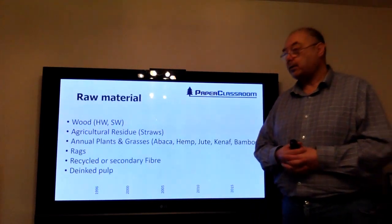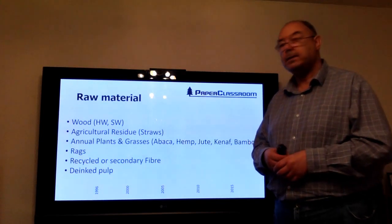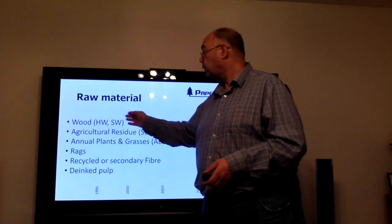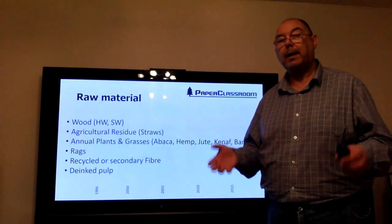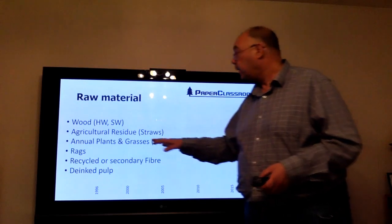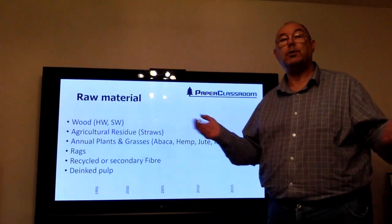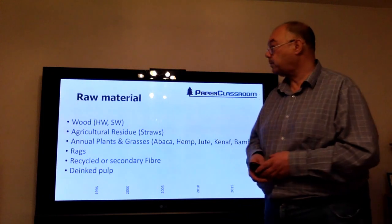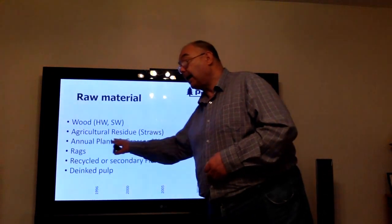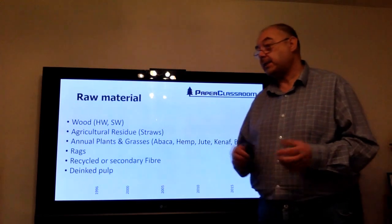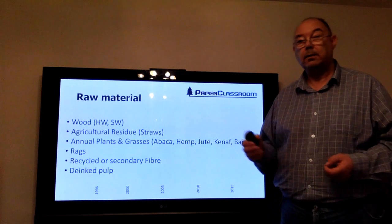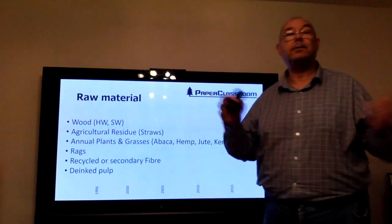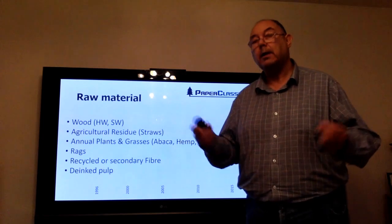You may choose to classify your material by the raw material — what your starting material was. It might be wood such as hardwoods and softwoods: pine, spruce, birch, eucalyptus. It may be agricultural waste used in parts of the world like Pakistan, India, and Spain — straw from cereal production. It may be annual plants such as grasses, esparto grass, hemp, jute, kenaf, or abaca.